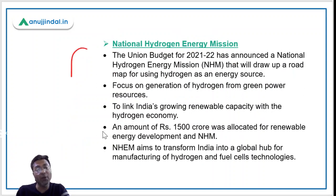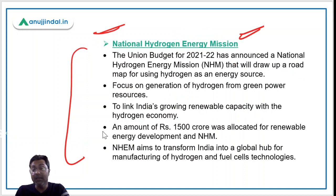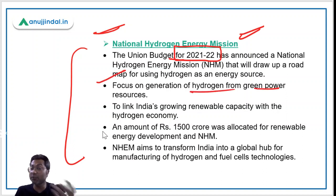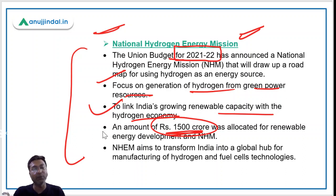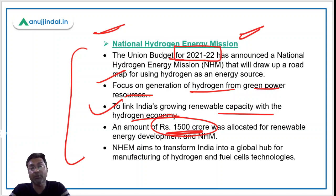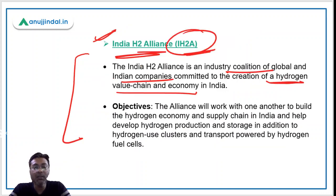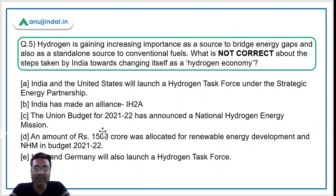We should also note the US-India Hydrogen Task Force, to be launched under the Strategic Energy Partnership, which will help scale technologies to produce hydrogen from renewable energy sources and bring down deployment costs. Additionally, the National Hydrogen Energy Mission was announced in Union Budget 2021-22, focused on generation of hydrogen from green power resources and linking India's growing renewable capacity with the hydrogen economy, with ₹1500 crores allocated.